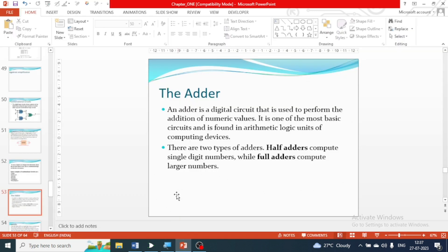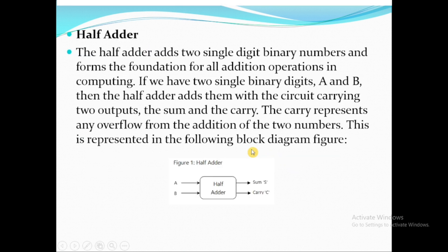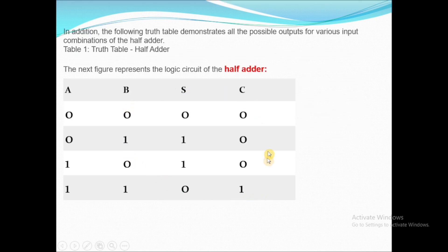First of all, what is the meaning of adder? An adder is basically a digital circuitry which is going to add the digits — the bits. Depending upon the number of bits, we may have a half adder or a full adder. If there are two bits, we use a half adder — inputs A and B — and we get a sum and a carry bit. This is the truth table.